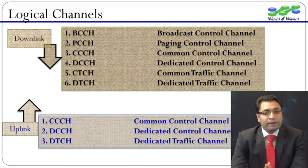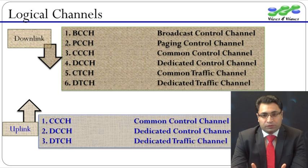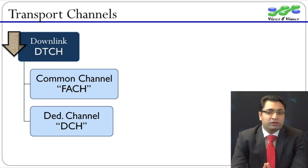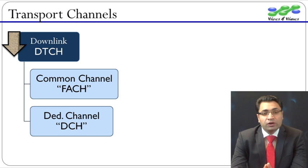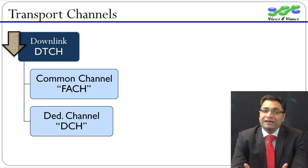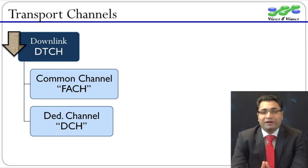The logical channels are mapped to transport channels in the transmitter. In downlink, for example, logical channel DTCH can be mapped on common transport channel FACH or dedicated transport channel DCH. Common channels are common resources of a cell which are shared by several users. Therefore, the bit rates are limited and the delay is unpredictable — the quality of service cannot be guaranteed.